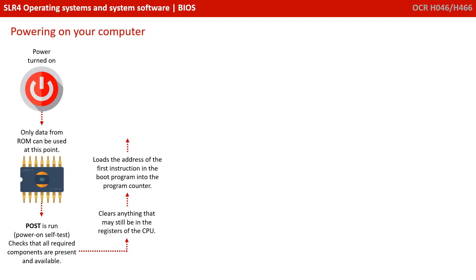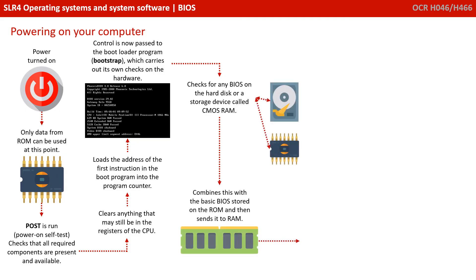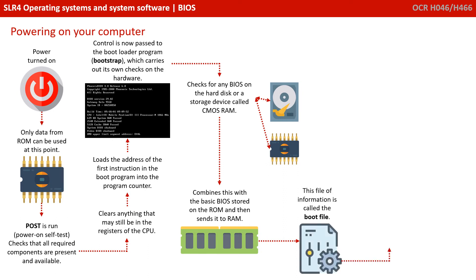It loads the address of the first instruction in the boot program into the program counter. At this point, control has passed to the bootloader program, also known as the bootstrap, which carries out its own checks on the hardware. It checks for any BIOS on the hard disk or a storage device called a CMOS RAM. It combines this with the basic BIOS stored on the ROM and then sends this to main memory. This file of information is known as the boot file.